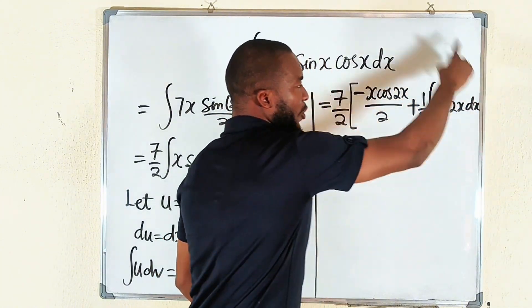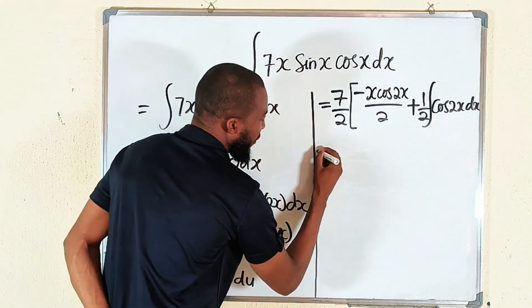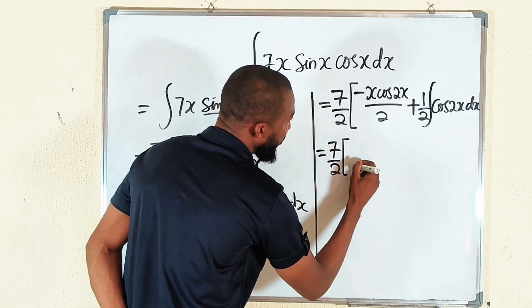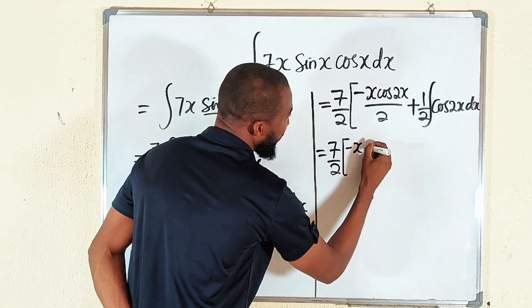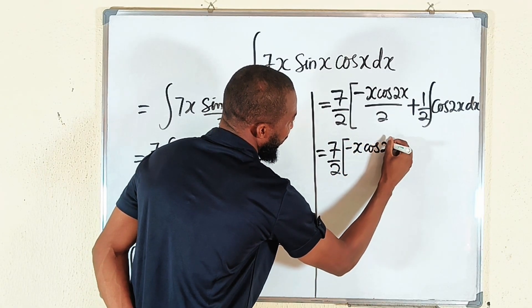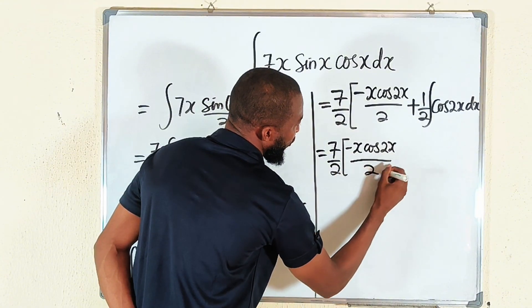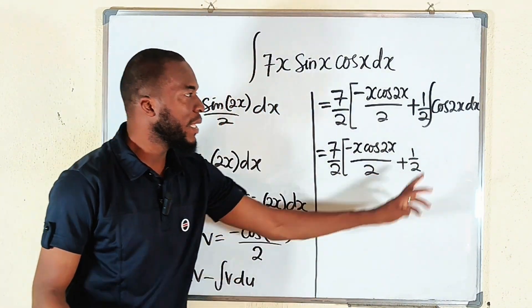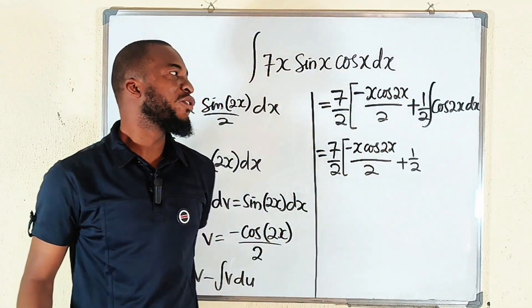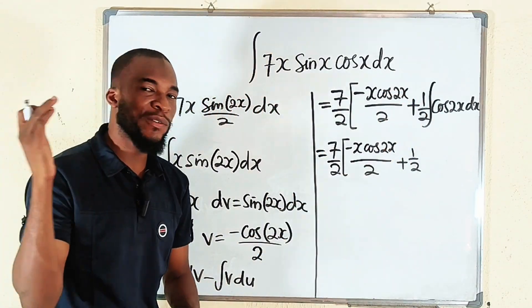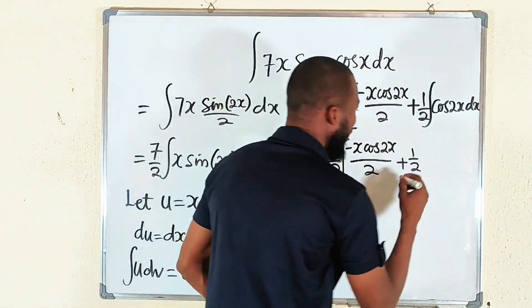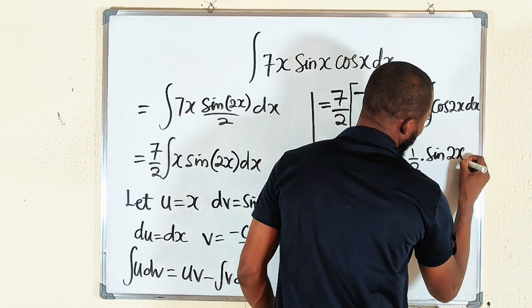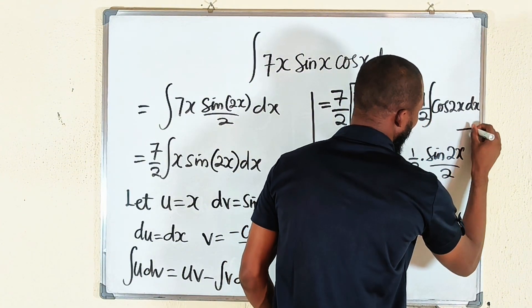Divided by 2 plus 1 over 2, we multiply the integral of cos 2x which is going to give us sin of 2x divided by 2.